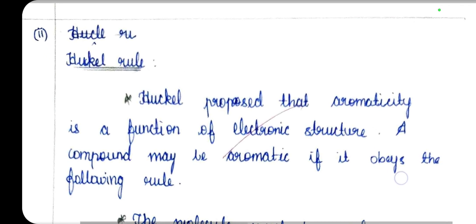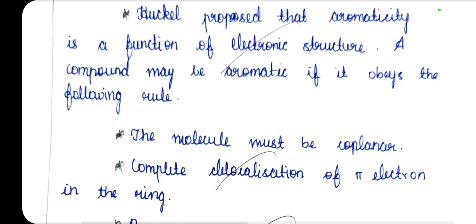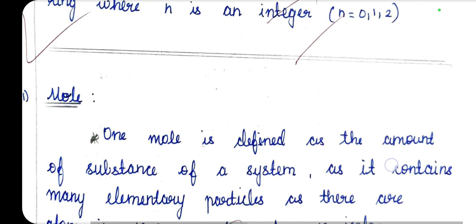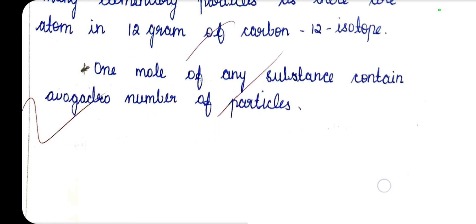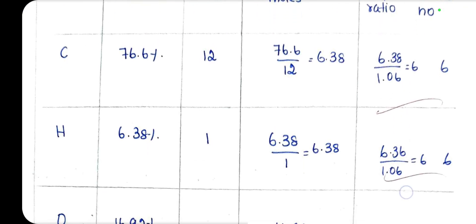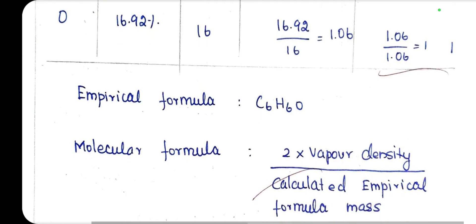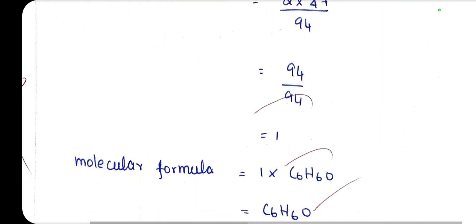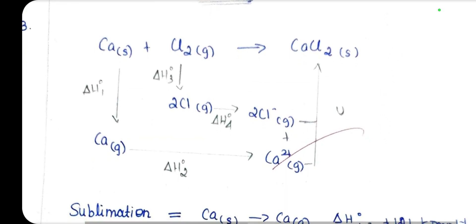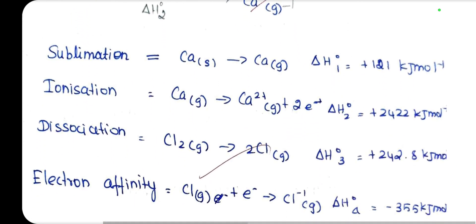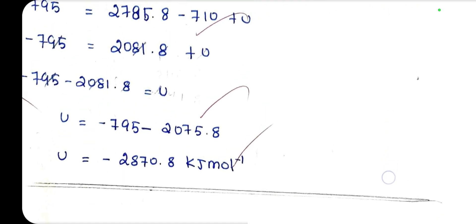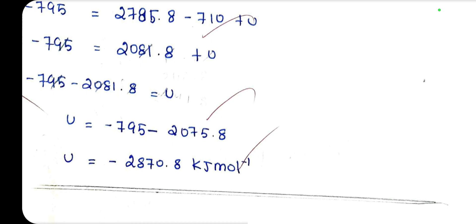Hückel's rule decides aromaticity: a compound is aromatic if it has (4n+2) pi electrons. Define mole for 2 marks. Empirical and molecular formula calculation from percentage composition and vapor density. Calcium chloride lattice energy calculation: the answer is -2870.8 kJ mol⁻¹.